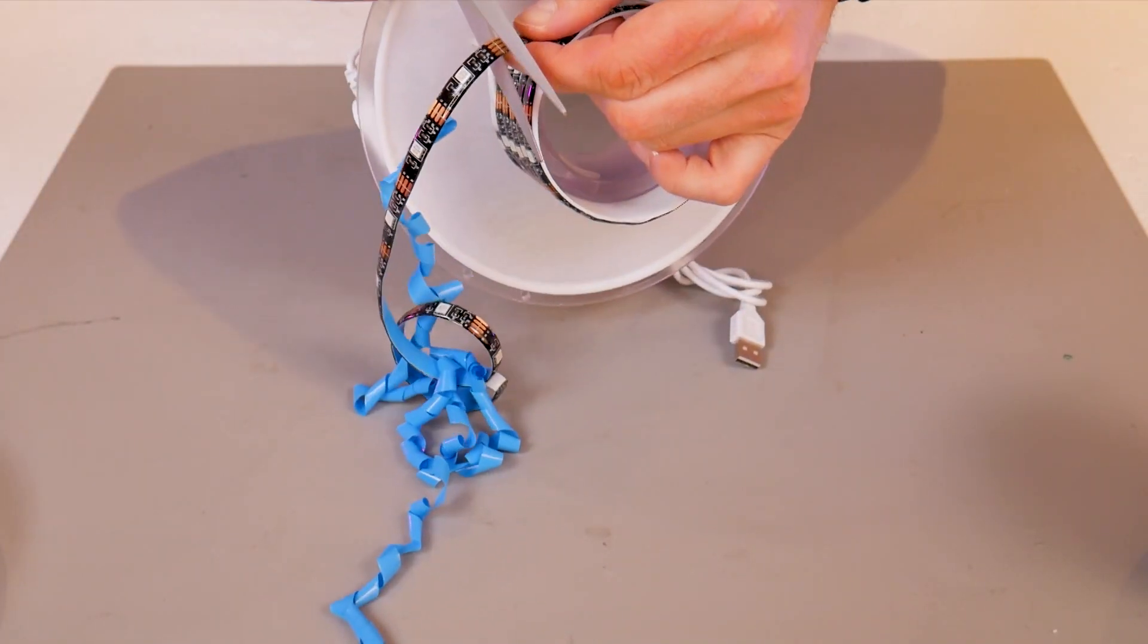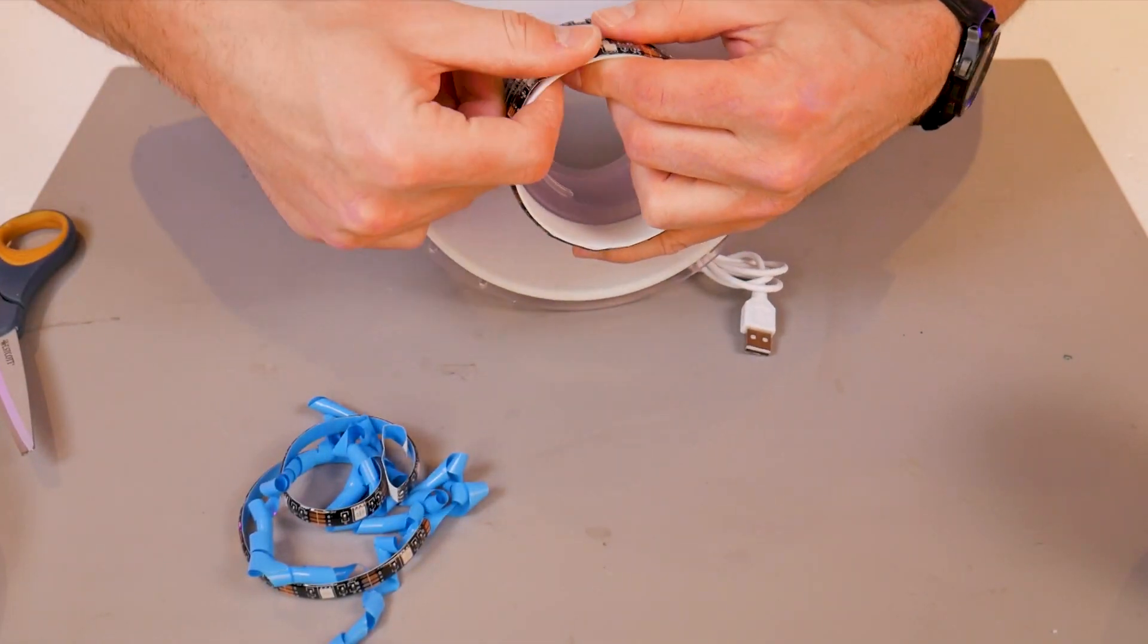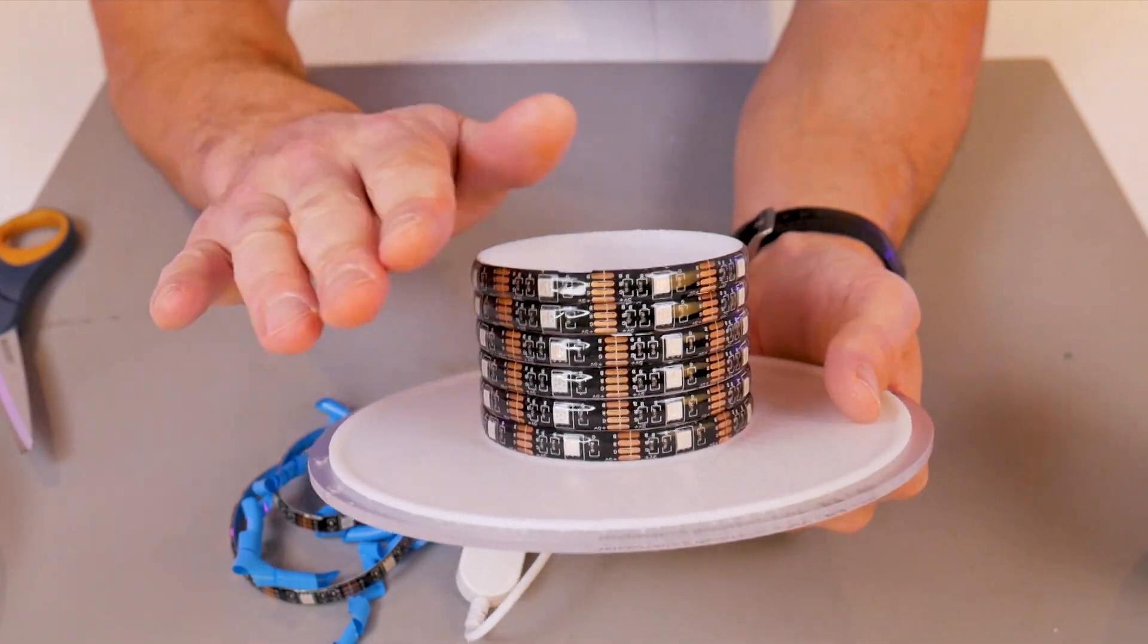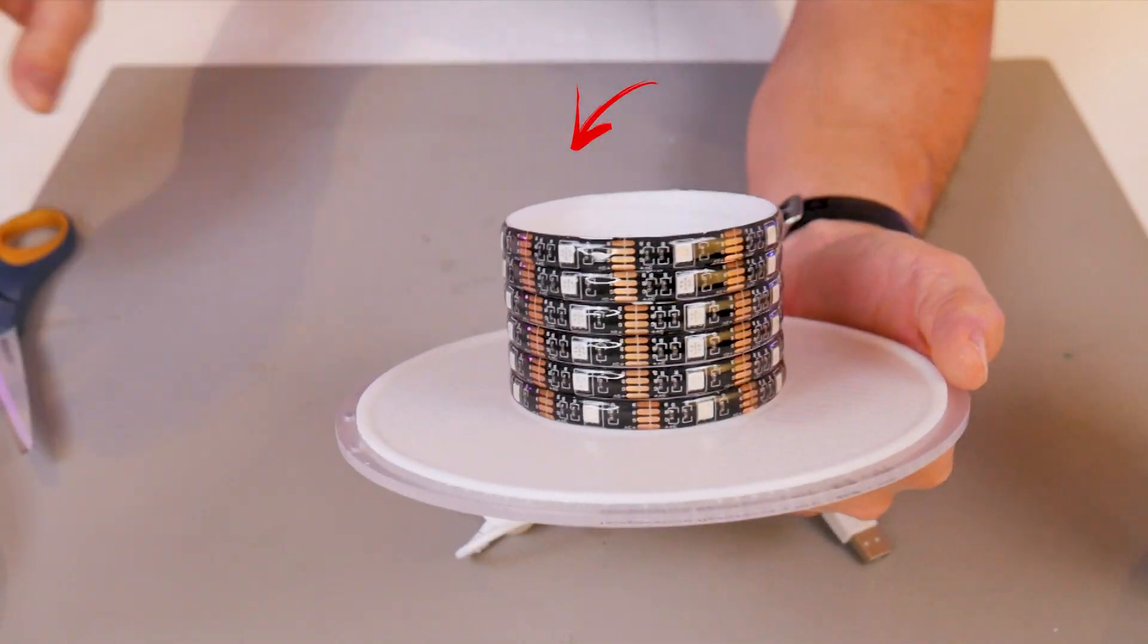For reference, my smart LED strip was about six and a half feet long, and I'll put a link down in the video description to the one that I used. Make sure you cut the excess at the designated cut lines, and when wrapping the LEDs around, be sure not to go above this top surface otherwise it will interfere with the assembly later on.